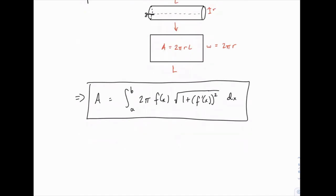Let's try an example. For example, let's revolve the function f(x) equals 3 square root of x, about the x-axis, from x equals 1 to x equals 4, and we want to find the surface area of the object that results from that.